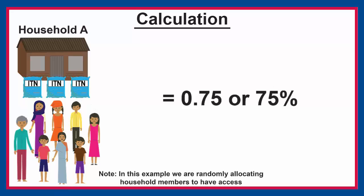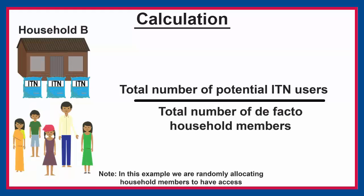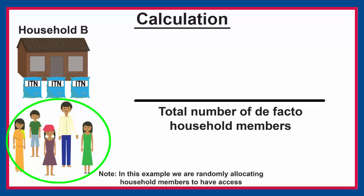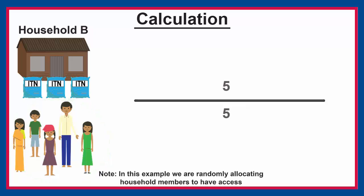In contrast, Household B has 3 ITNs and 5 people. To calculate potential users, we multiply the 3 ITNs by 2, which would be 6. However, the number of potential users cannot be larger than the actual number of household members. Since Household B has 5 members, we limit the potential users to 5. We take 5 and divide by the 5 household members, which would be 100% — in other words, all 5 people have access.